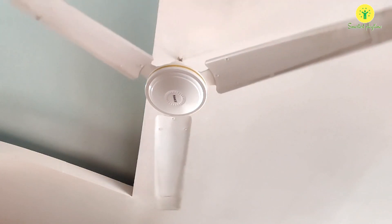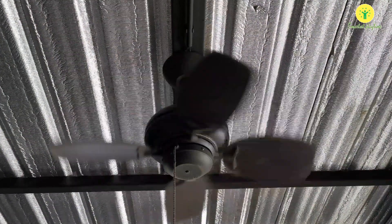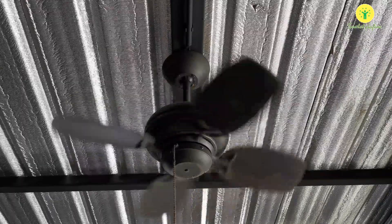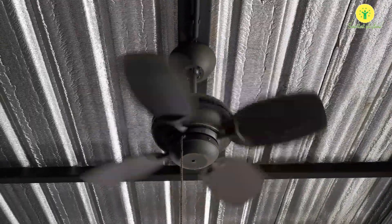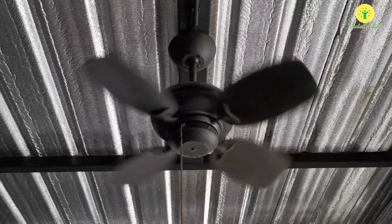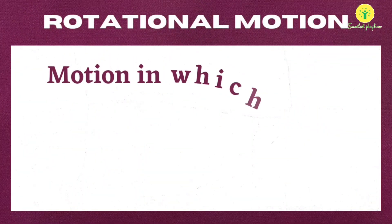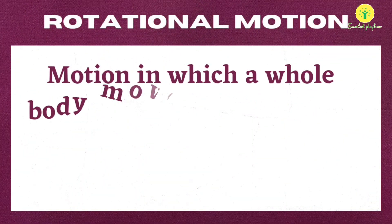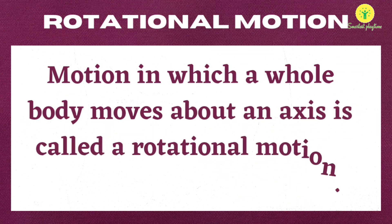In case of a ceiling fan, the blade shows circular motion. But if we see the unit as a whole object, the fan rotates on its own fixed axis. When an object moves around an axis passing through its center, this type of motion is called rotational motion.